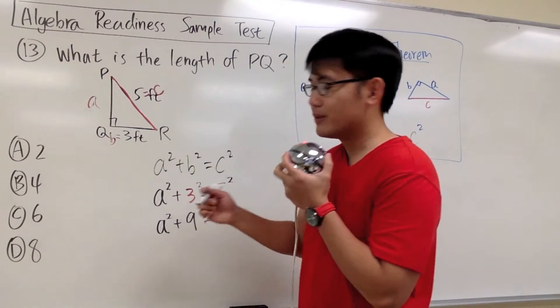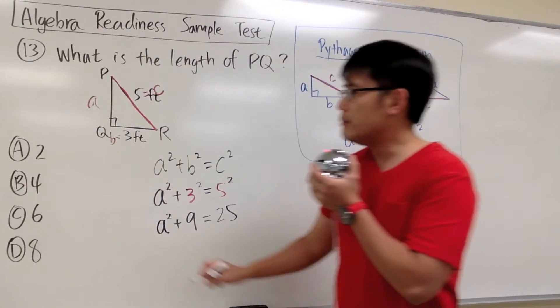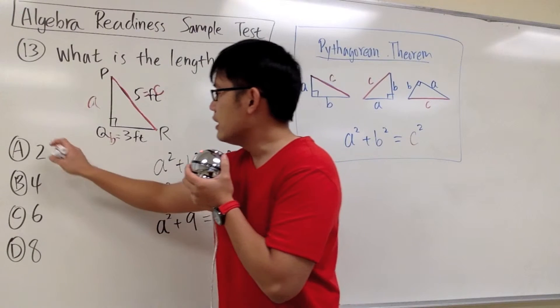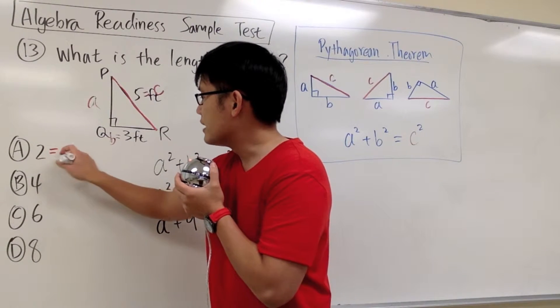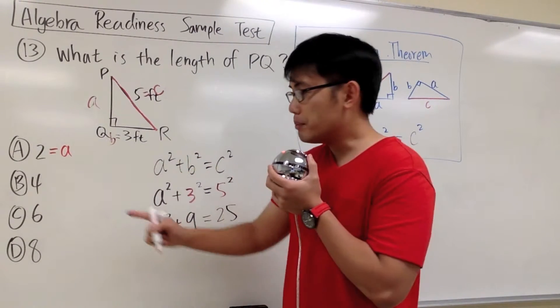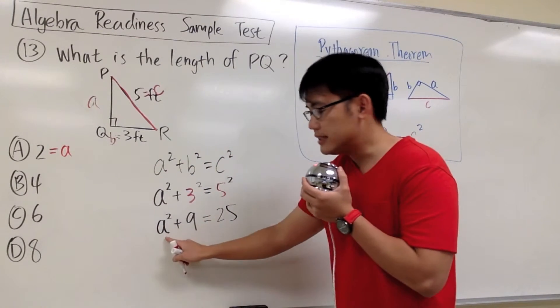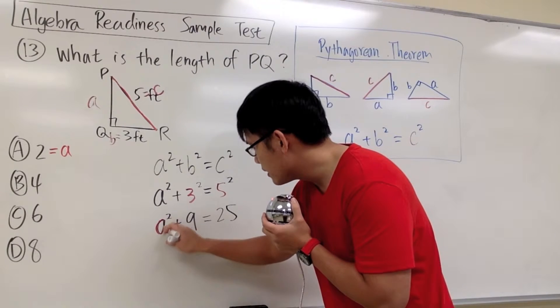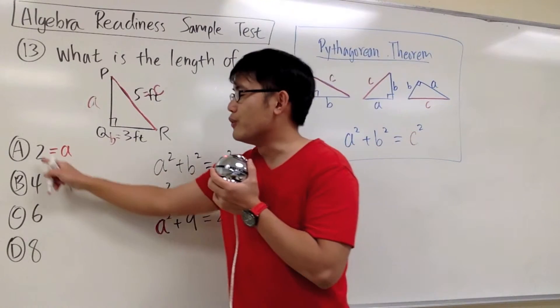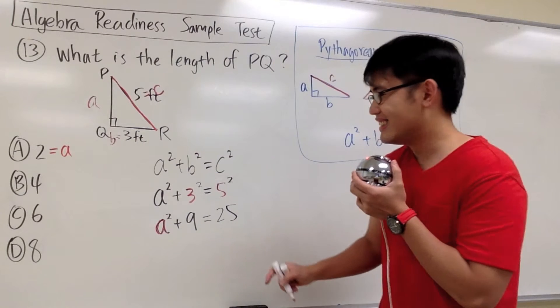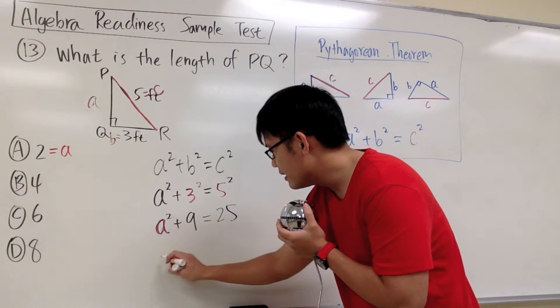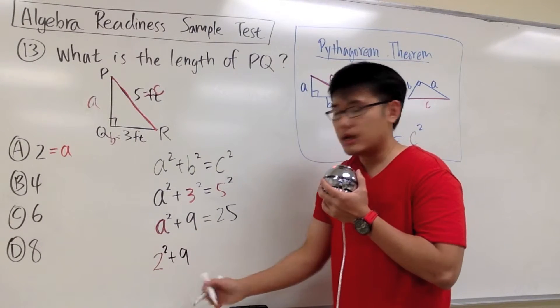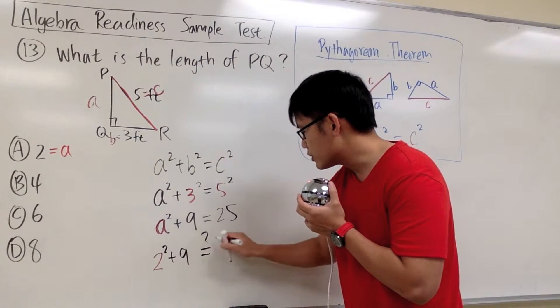What we can do, and this is really just like a test-taking strategy, let me pick A for the answer. If A is the answer, we're saying 2 is equal to A. I'm going to plug in 2 into this A to see if it works or not. I'll focus on the A right here, and I get a 2 from choice capital A. So I'll put in the 2 right here. It looks like we have 2 squared and then plus 9. And now, do we end up with 25?